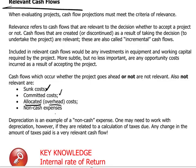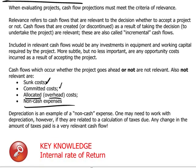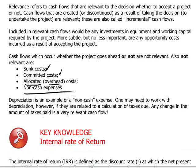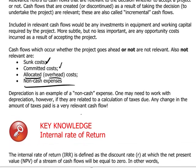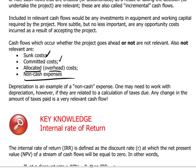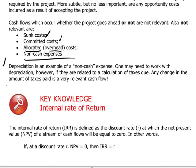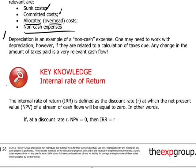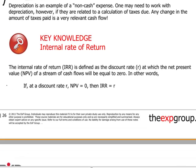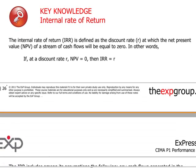Allocated costs usually come in the form of overhead costs from other parts of the company, and of course non-cash expenses are not relevant by virtue of not being cash at all. A good example of a non-cash expense is depreciation.